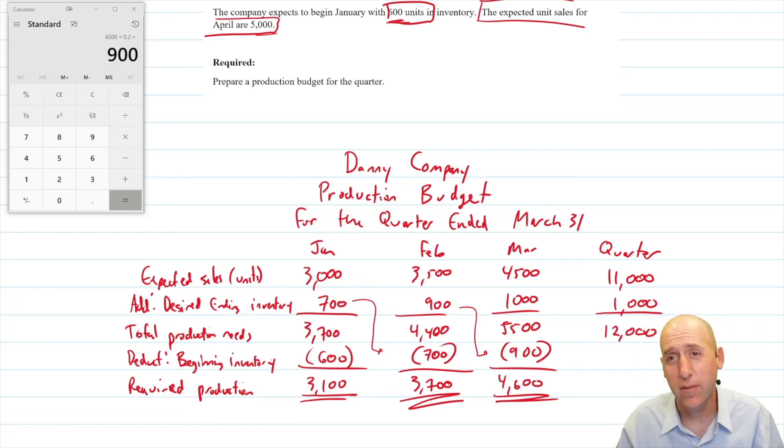11,000 plus 1000 is 12,000. What's our beginning inventory? Again, we do not total this and it's not the beginning of March. It's the beginning of the quarter. What was the first day of the quarter? The first day of the quarter was January 1st. So I go back to January. I see it's 600. I take away 600 here. That's my beginning inventory. 12,000 minus 600 is 11,400. And there we have it. We have prepared ourselves a very nice looking production budget.